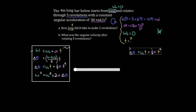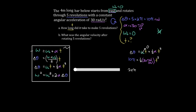Plugging in: delta-theta equals 10 pi radians, omega-initial is zero so that whole term drops out, leaving 10 pi equals one-half times 30 times t-squared. Multiply both sides by two to get 20 pi, then divide by 30, giving 20 pi over 30 radians divided by radians per second squared. Take the square root because it's t-squared, and we get t equals approximately 1.45 seconds. The units cancel correctly: radians cancel, leaving seconds squared under the root, which gives seconds.